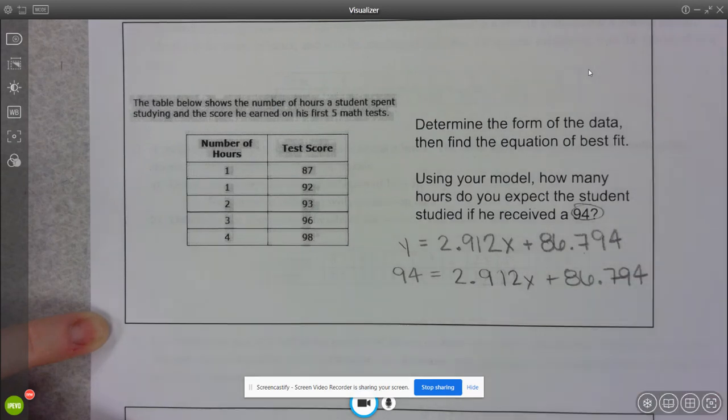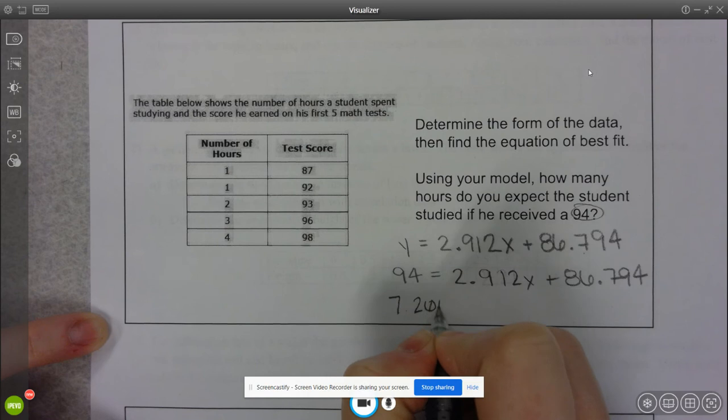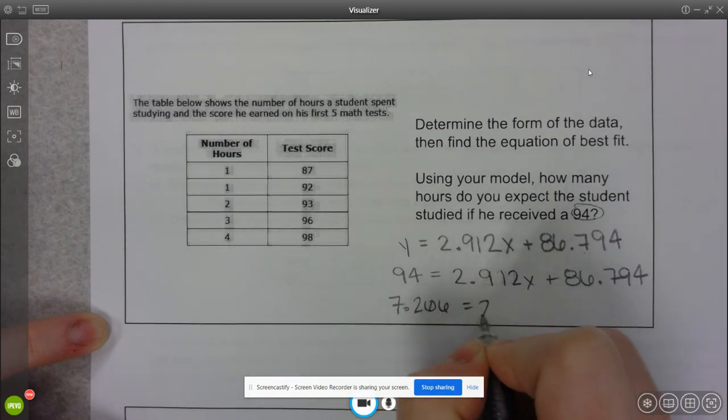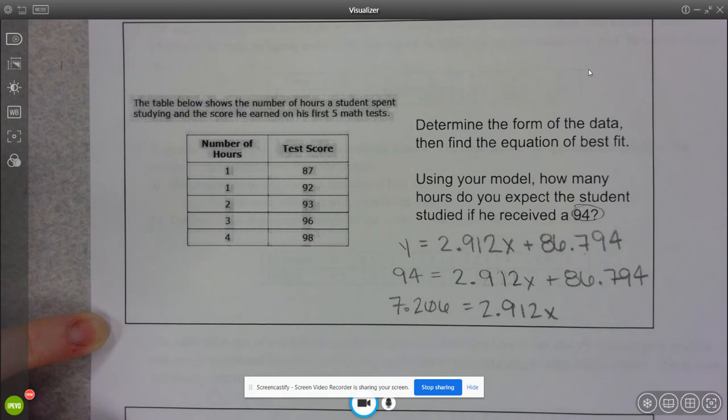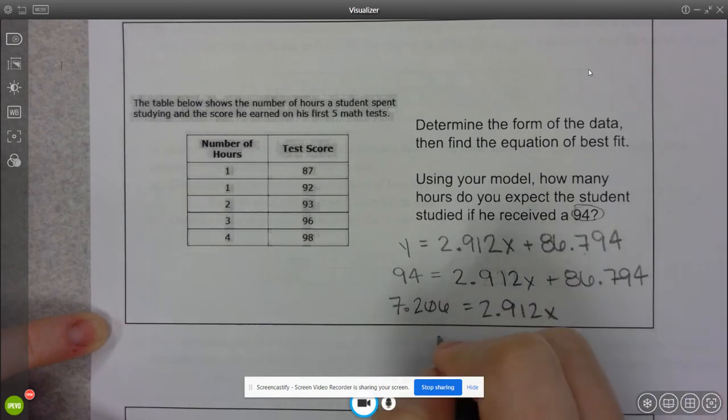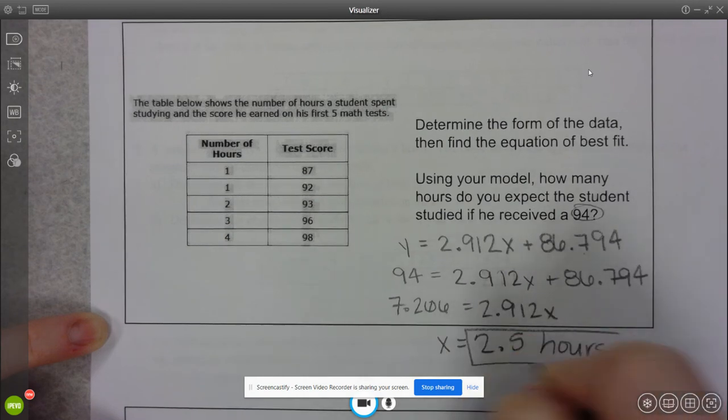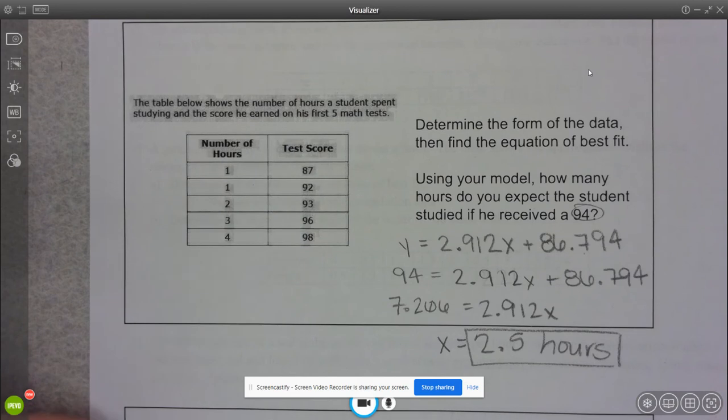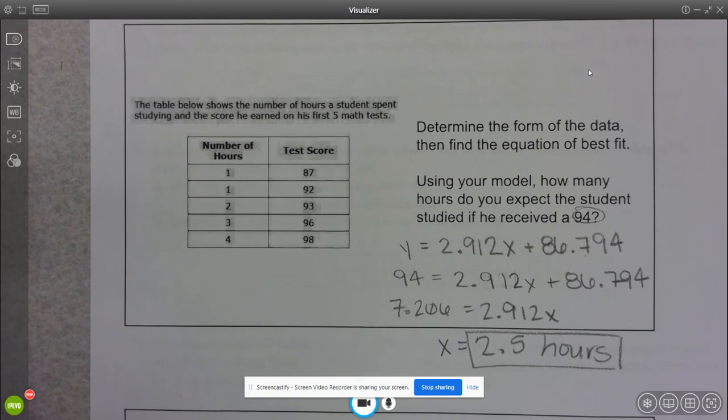And I'm going to go ahead and start solving this. So I'm subtracting first. So 7.206 equals 2.912x. And then dividing tells me they spent about two and a half hours studying. And yes, I did round in that case.